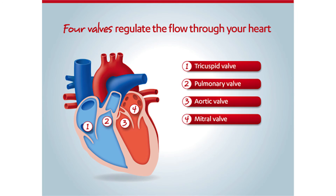There are four valves that regulate the flow of blood through your heart. The tricuspid valve controls blood flow between the top and bottom of the right side of the heart. The pulmonary valve prevents blood from leaking back into the right ventricle after it is pumped out to the lungs.